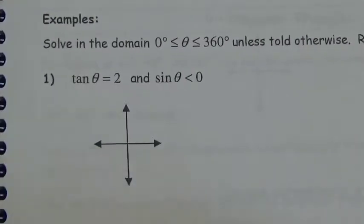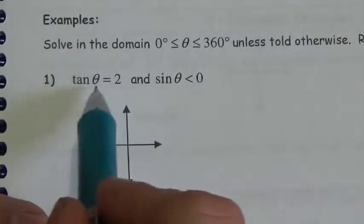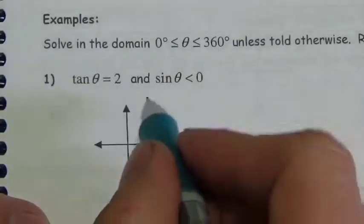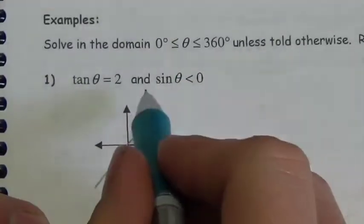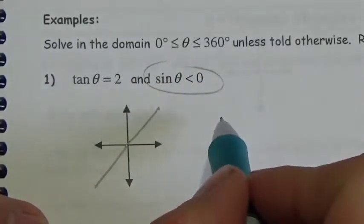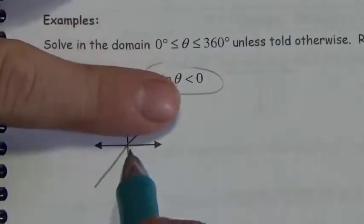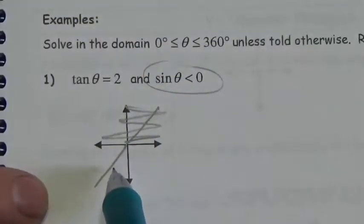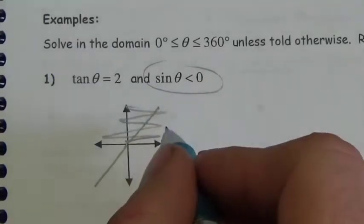Now we're going to solve problems with a little bit of a different twist. For example, tangent of theta equals positive 2. Tangent is positive in quadrants 1 and 3. But we're also given the extra information that sine is negative. Sine is negative in quadrants 3 and 4. The overlap is in quadrant 3, so I'm only looking for a quadrant 3 angle — just one answer.